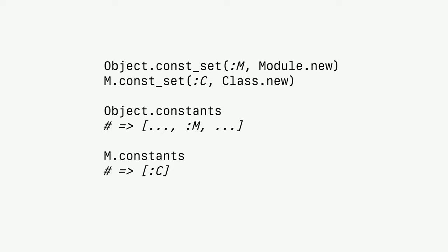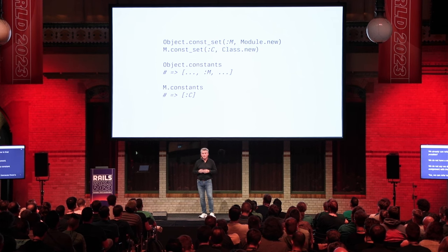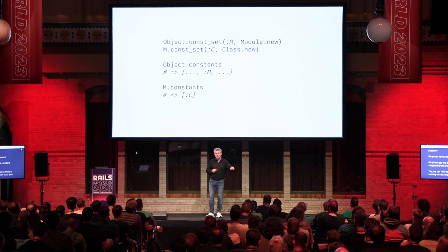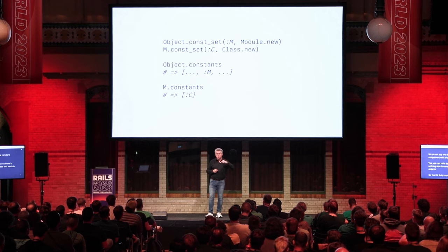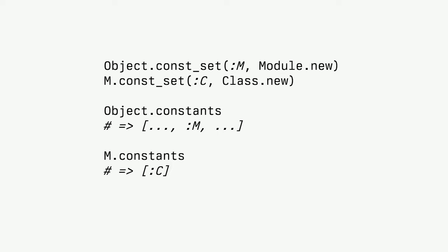Let's look at the same thing using the API. We create a module object in the first line and assign it to the M constant in Object — a top-level M. In the second line we can already refer to M even without a module keyword, because M is a constant stored in Object; Ruby looks up the constant in certain places, finds it in Object, and so we can call const_set on it to create the nested class.